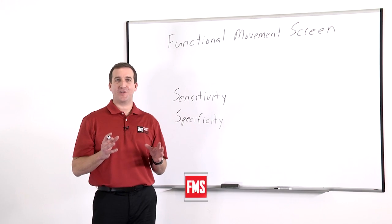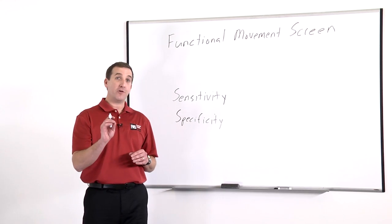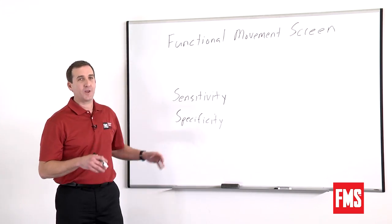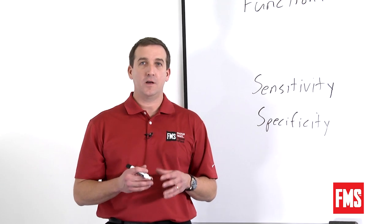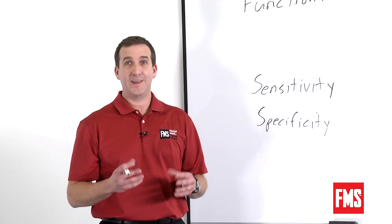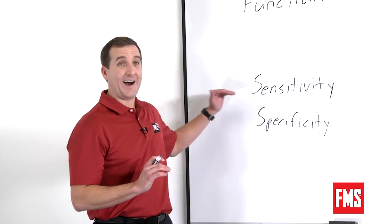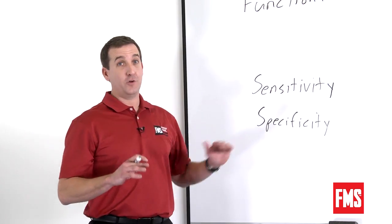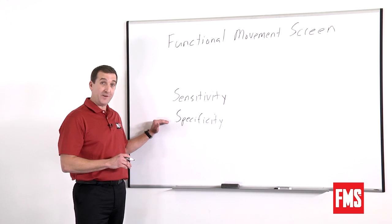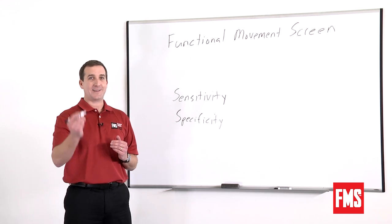I want to talk today about some common misconceptions with the functional movement screen when it's used in research. But in order to do that I have to define a few terms first. We're going to talk about sensitivity and specificity. When used in medicine, a screen is to identify people who might have a problem. To have a good screen you don't want to miss anybody, meaning you want a highly sensitive screen so you don't leave anyone out who possibly has the disorder. A specific test, on the other hand, is a test that if positive means the person likely has the disorder.